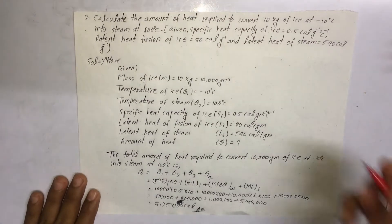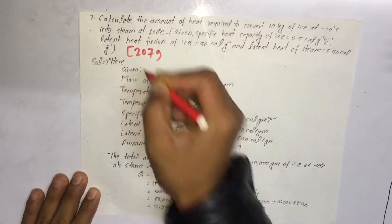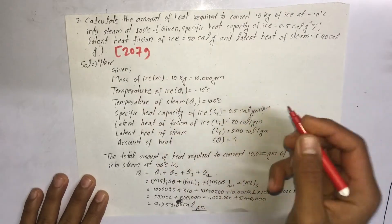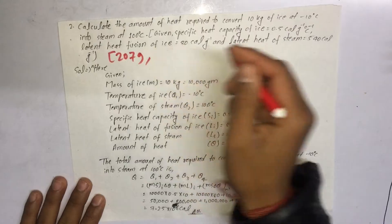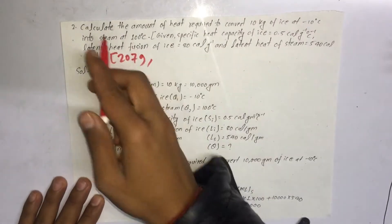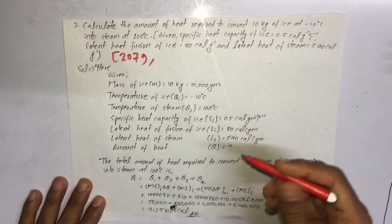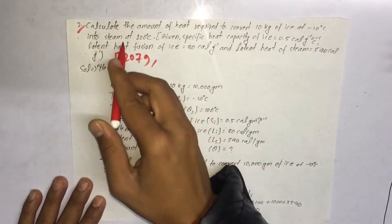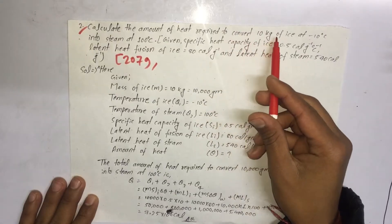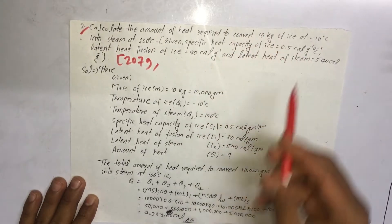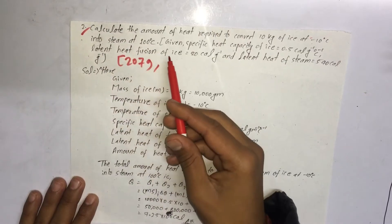Hello. The question is: calculate the amount of heat required to convert 10 grams of ice at minus 10 degrees Celsius into steam at 100 degrees Celsius.